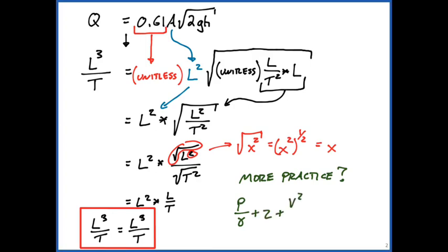If this wasn't comfortable for you or you want more practice, what I've written here in green is p, as in pressure, which we covered in lecture one, divided by gamma, which is specific weight, plus z, take z as a length scale, that's an elevation, plus v squared over 2g, where v is velocity and g is the gravitational constant.